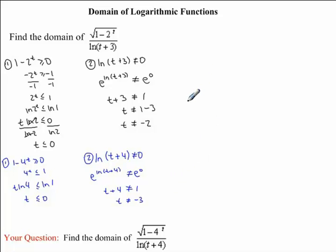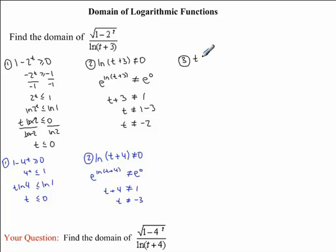Here's the answer you should have got. Now you might be tempted to think that we are done finding our restrictions on t. However, because there's this ln in front of the t here, we need to ensure that the number is positive, because we can only take the ln of positive numbers. So t plus 3 must be positive. So our third restriction is t plus 3 must be greater than 0. Isolating for t, we bring the 3 to the other side and make it negative, so we'll have t is greater than negative 3.